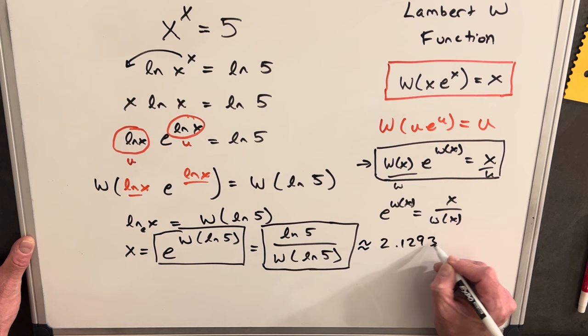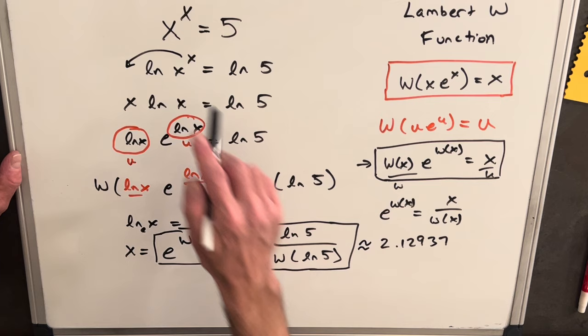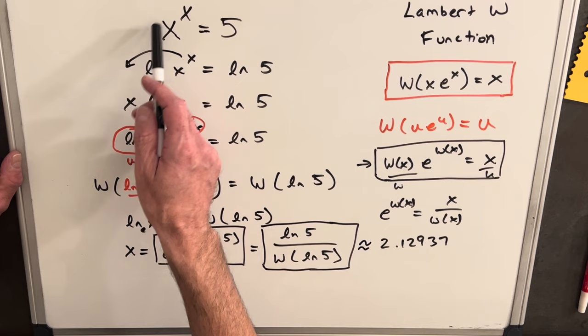And that kind of makes sense. If you think about it, if you note like 2 to the 2 is 4, now if you want as high as 3 to the 3, it's 27. So it's going to be fairly close to 2. And that's what we see here.